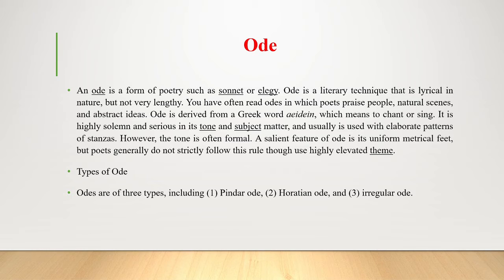Romantic poets preferred the personal ode of description and passionate meditation, which is stimulated by and sometimes returns at its close to an aspect of the outer scene, turning on the attempt to solve either a personal emotional problem or a generally human one. Examples include Wordsworth's 'Intimations Ode,' Coleridge's 'Dejection: An Ode,' and Shelley's 'Ode to the West Wind.' More recent examples include Allen Tate's 'Ode to the Confederate Dead' and Wallace Stevens's 'The Idea of Order at Key West.'